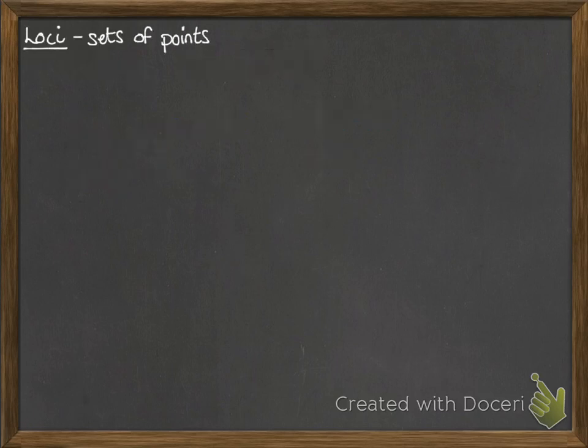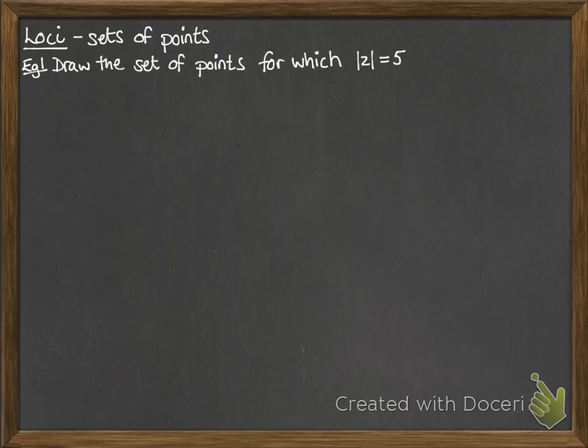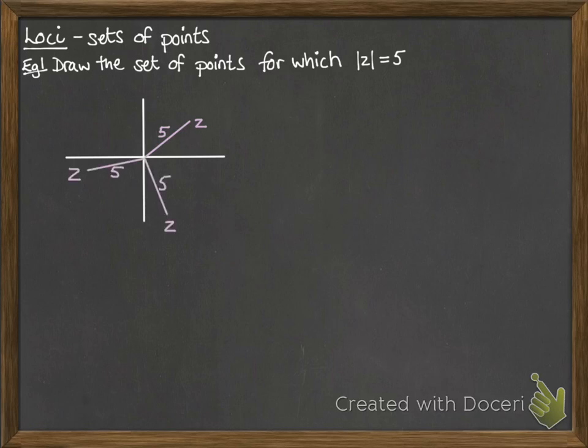Now loci, this is sets of points, easiest to show you with some examples. So we're going to draw the set of points for which the modulus of z equals 5. So think about our Argand diagram. We want all of the possible z's that have a length of 5. So we could have this one, or it could be over here, or it could be over here. But you'll soon see the picture. Whatever we draw, it can be anywhere on that circle that's radius 5 because the length of the vector would then be 5. So the locus of all the points that have a modulus of z equals 5 is that circle with radius 5 centered at the origin.